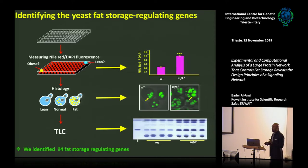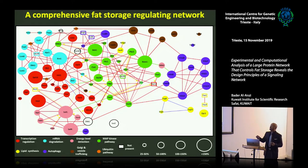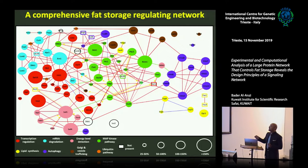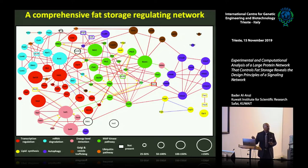When we completed this, we identified 94 fat storage regulating genes. This network slide illustrates an important point: we discovered that those genes include proteins that are physically connected to one another, forming a large and extensive network. The color represents the molecular function of the protein — green for MAP kinases, purple for TOR kinase and autophagy proteins, light blue for mRNA deadenylation and degradation, and red for transcription factors.